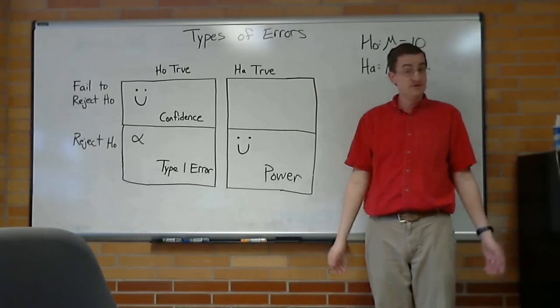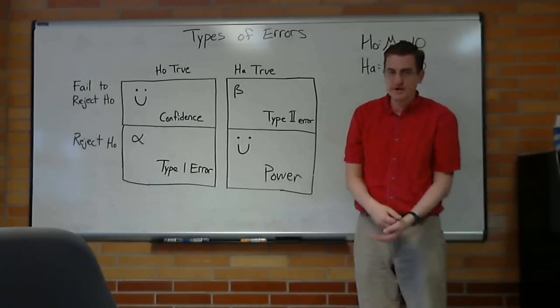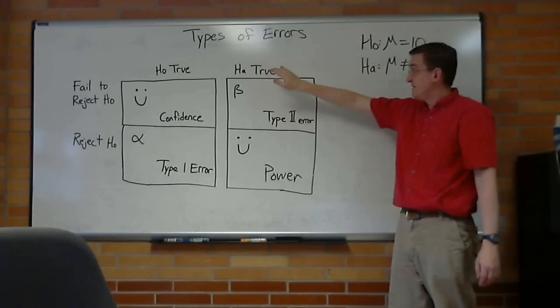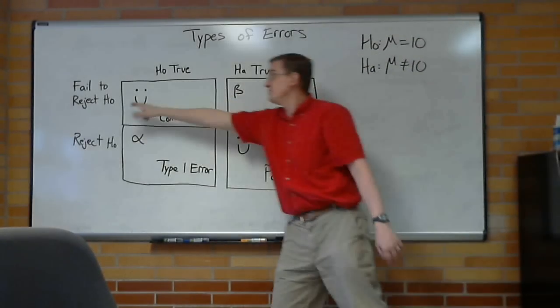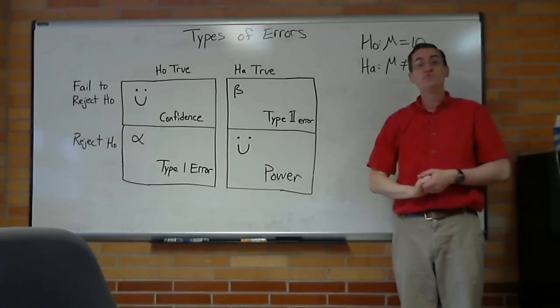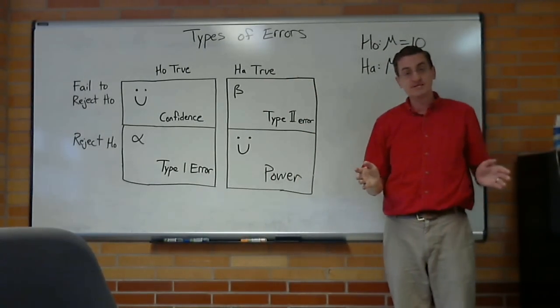You might guess the name of the other one. It's not like we're super creative with our names. A type two error is when the null was a lie. The alternative was true. The null was a lie, but we thought it might be okay. That's a type two error. How often does that happen? We use the Greek symbol beta to represent that.